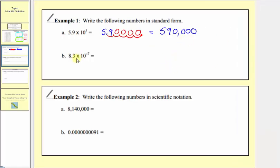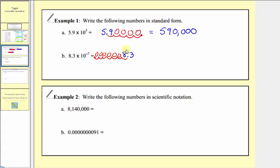For part b, we have 8.3 times 10 to the negative seven. Because we're multiplying by a negative power of 10, our product in standard form is going to be less than 8.3. So starting with 8.3, because the exponent is negative seven, we move the decimal point to the left seven places and fill in the missing digits with zeros. In standard form, we put a zero in the ones place, giving us 0.0000083.